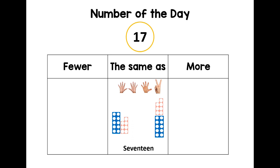Now can we think of a number that is fewer than 17? All the numbers on a number track that go from zero, one, two, three, four, five, six, seven, eight, nine, ten, eleven — they're all fewer. So what number can you think of that's fewer than 17? I thought of the number 11!